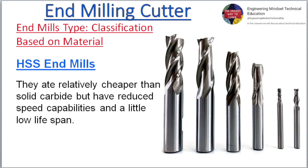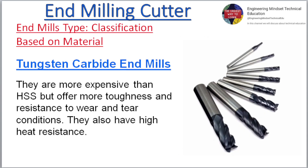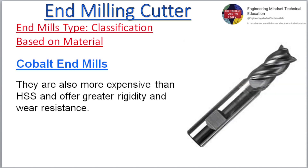End mill type classification based on material: HSS end mills are relatively cheaper than solid carbide but have reduced speed capabilities and a slightly low lifespan. Tungsten carbide end mills are more expensive than HSS but offer more toughness, resistance to wear and tear, and high heat resistance. Cobalt end mills are also more expensive than HSS and offer greater rigidity and wear resistance.